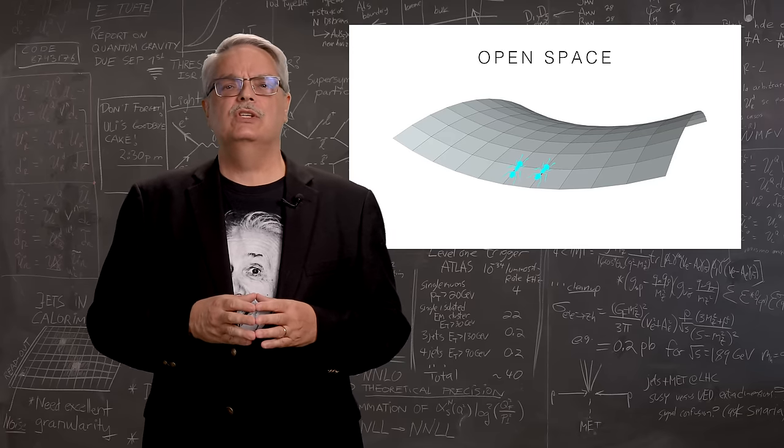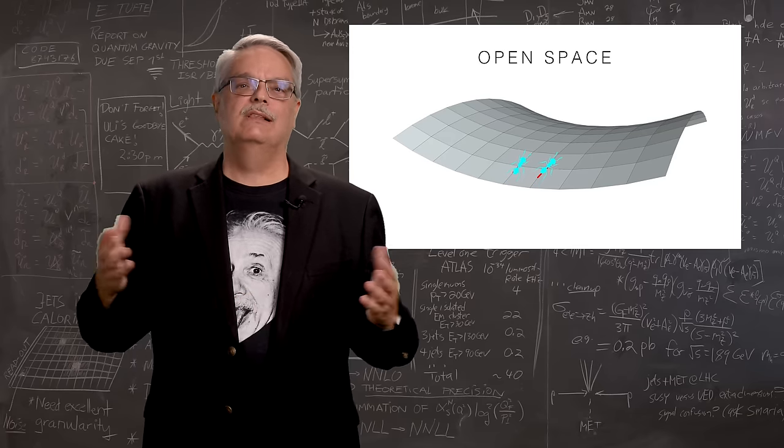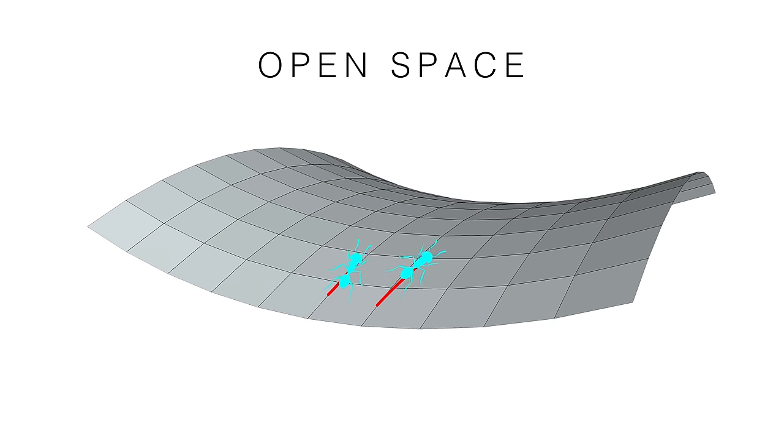And the opposite is true in an open space like the saddle space. There, the two ants, initially a fixed distance apart from one another and walking in straight lines, will eventually diverge and get farther apart. That's just curved space for you.